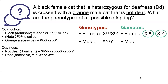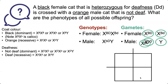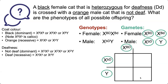Let's figure out the gametes for both the female and the male. For the female, these are the gametes she would produce, and for the male, these are the gametes he would produce. Now let's pull these down into a Punnett square — we'll put the male on the side and the female on top.